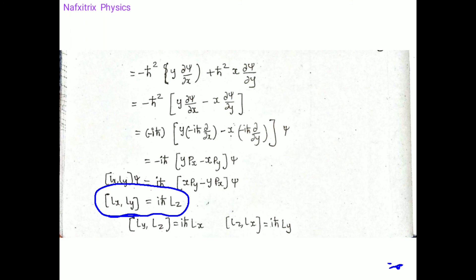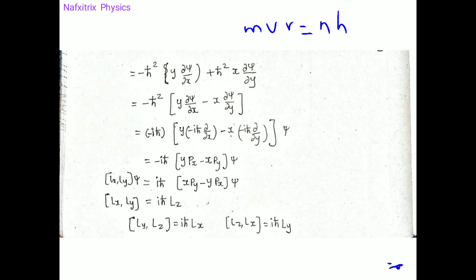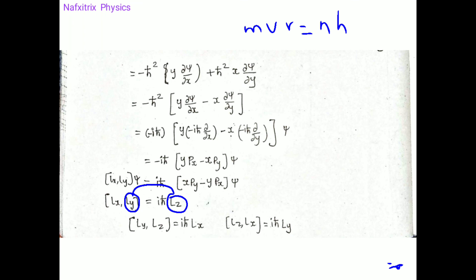An important check: the result is iℏ·Lz. Here ℏ has dimensions of angular momentum (from mvr = nℏ), and Lz also has dimensions of angular momentum. So Lx·Ly has dimensions of angular momentum squared, which is consistent since iℏ·Lz carries those same dimensions.